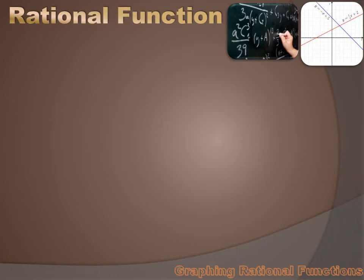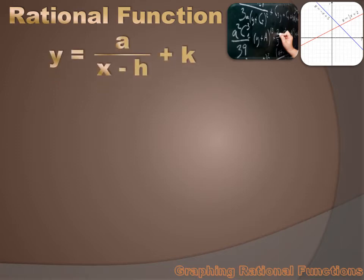A rational function is a function that can be written as a ratio or a fraction, and x is going to be in the denominator of this fraction. The generic form is y equals a over x minus h plus k. Before this lesson's over, you'll understand what all those letters mean and how they impact the graph.